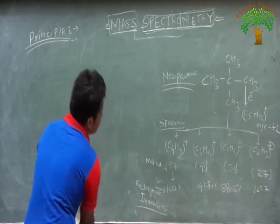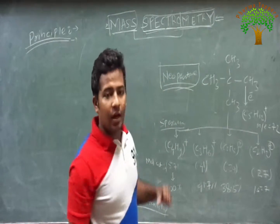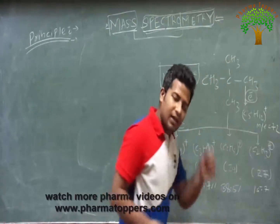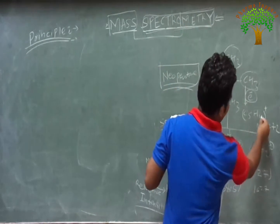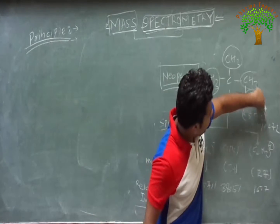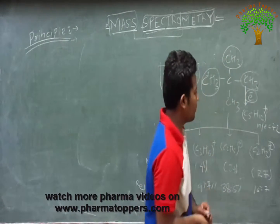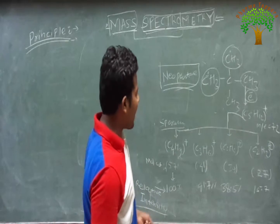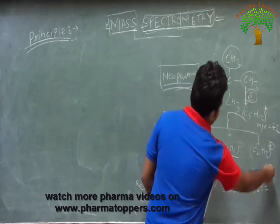By solving the example of neopentane, we can compare this with our basic principle of mass spectrometry. When neopentane is bombarded with an electron, it removes one electron from a methyl group, forming the radical cation C₅H₁₂⁺•. That electron may be removed from any of the CH₃ groups. Upon fragmentation of this C₅H₁₂ radical cation, we get mainly four fragments: C₄H₉, C₃H₆, C₂H₅, and C₂H₃.